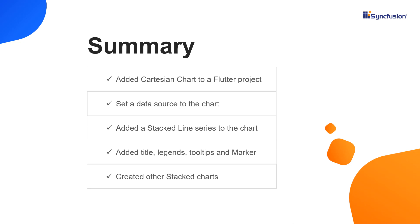That's it. Let me summarize the main points of this video. You saw how to add the Syncfusion Flutter Cartesian chart widget to a Flutter project. You learned how to set a data source to the chart and add a stacked line series to it. You also learned how to add a title, legends, tooltips, and show markers in the stacked charts. Finally, I showed you how to create other stacked chart series. You can download this working example from the GitHub link and the documentation link in the video description below. You can also check if you are eligible for our community license, which gives you a free license key to use our Flutter products. If you found this video useful, click the like button and subscribe to our channel to get notifications about new videos. We'll see you next time.